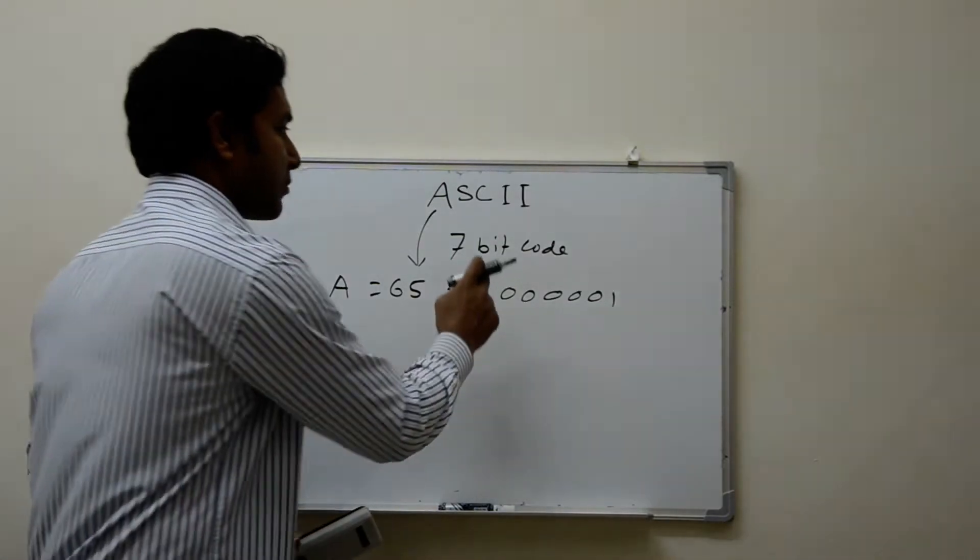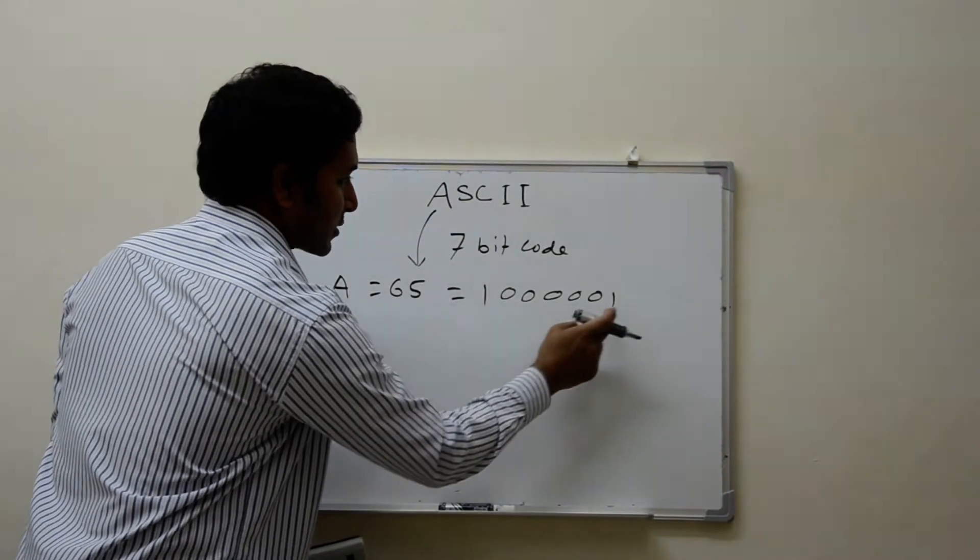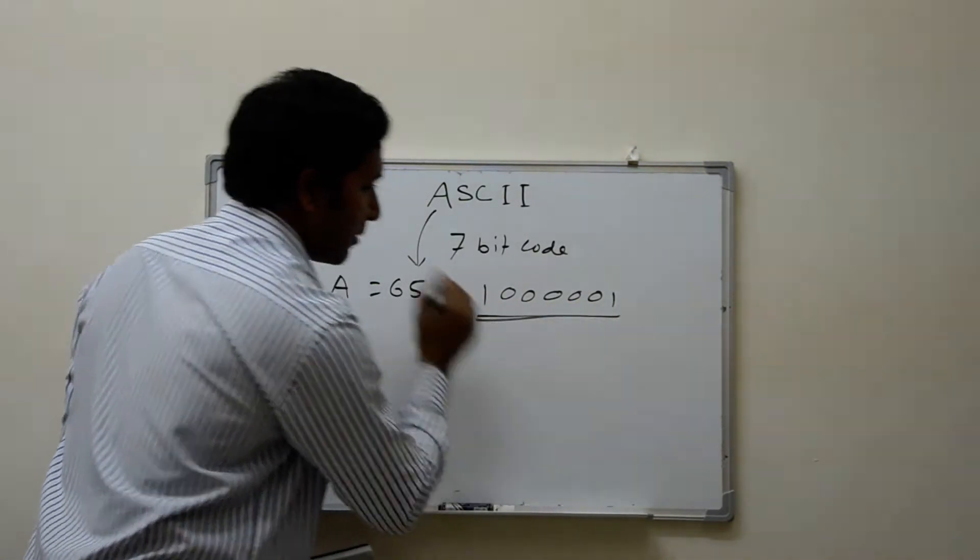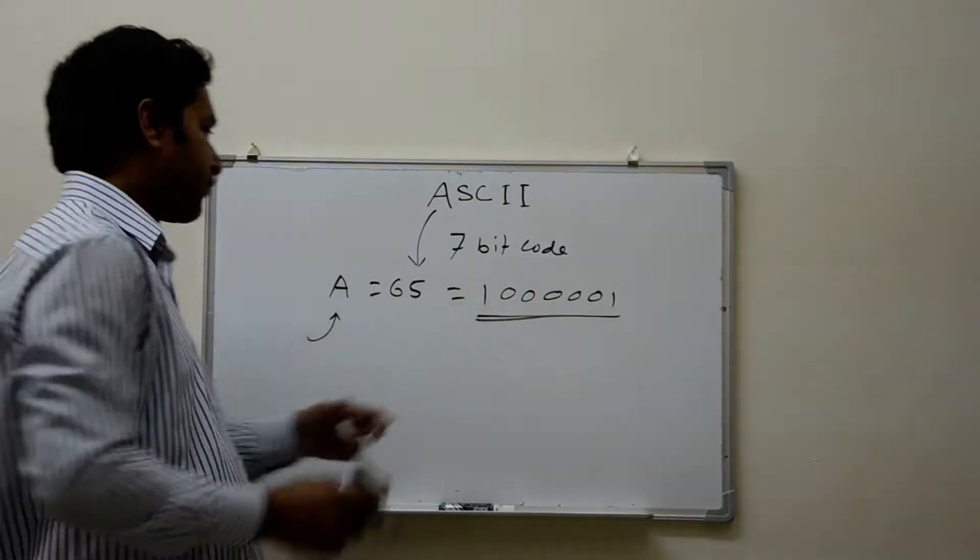Now, what does it mean, this 7 bit? See, how many bits it is? It's 1, 2, 3, 4, 5, 6, 7. So it's a 7 bit code. Now, any character that is there in the computer.